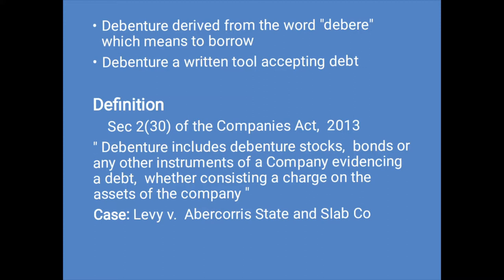Now let us move on to the definition of a debenture under Section 2, subsection 30 of the Companies Act 2013. It states: debenture includes debenture stock, bonds, or any instruments of the company evidencing a debt, whether constituting a charge on the assets of the company or not. This section provides that the company has a right to issue bonds or debentures which are instruments of debt, which can be both secured or unsecured by way of creating a charge on the assets of the company. Another definition given under the case of Levy vs. Abercorris State and Slab Co. is that a debenture is a document which either creates a debt or acknowledges it, and any document which fulfills either of these conditions is a debenture.